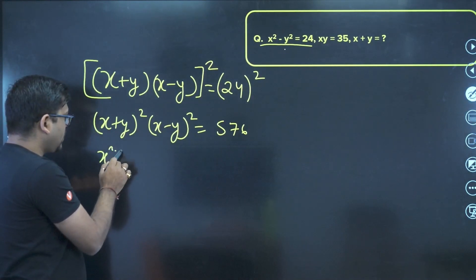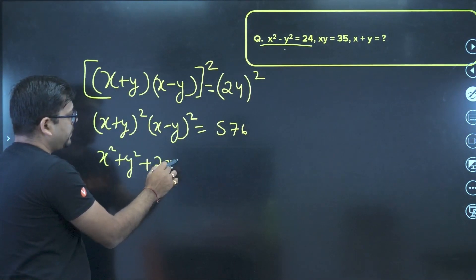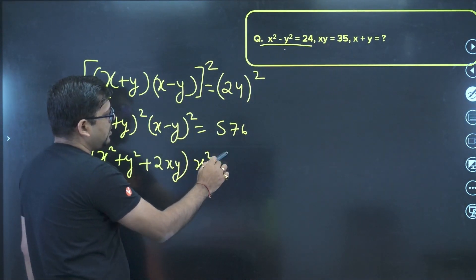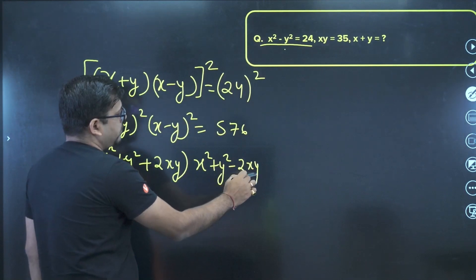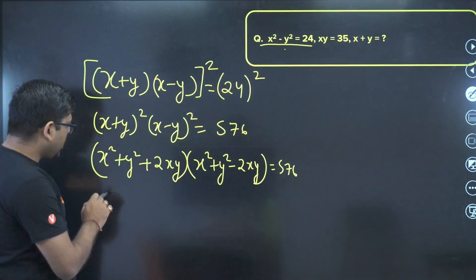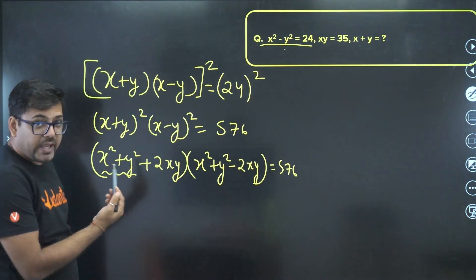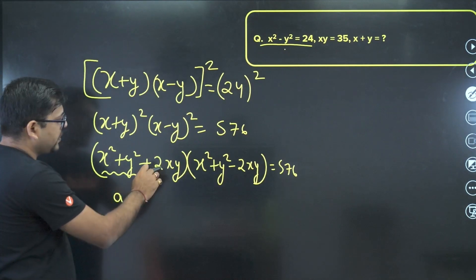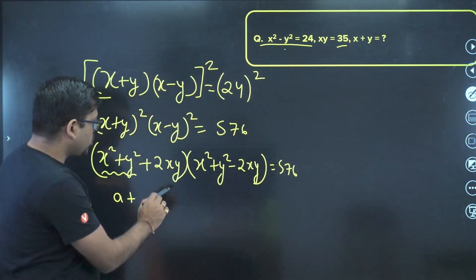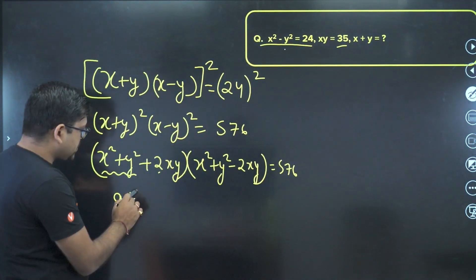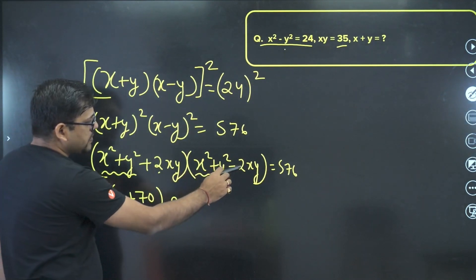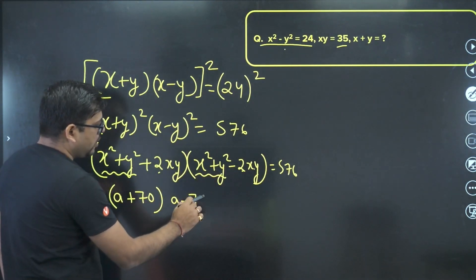Now (x+y)² expands as x²+y²+2xy, and (x−y)² expands as x²+y²−2xy, and that equals 576. Let's assume x²+y² to be 'a'. So we have (a + 2xy) times (a − 2xy). Since xy = 35, we get (a+70)(a−70) equals 576.